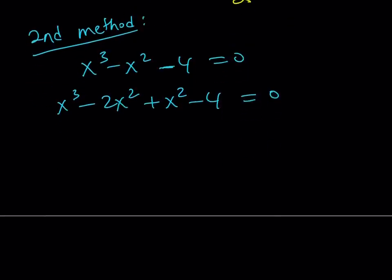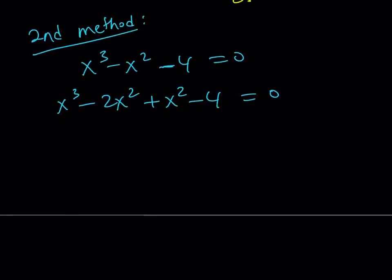The good thing about writing it this way is we can factor it by grouping just like before, but it's slightly different. So I can now take out x² times (x - 2). And this is, again, difference of two squares. So I can write it as (x + 2)(x - 2).